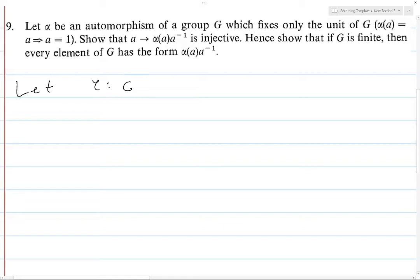So we're going to let phi from G to G be the map given by phi of a equals alpha of a times a inverse, where of course alpha is the automorphism, as in the problem statement.